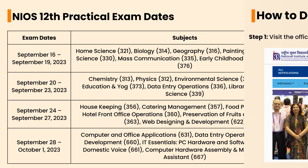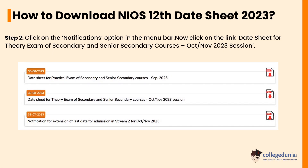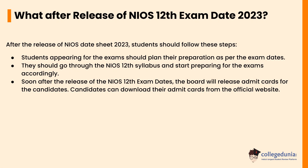Let's check how to download the NIOS Class 12 date sheet 2023. First, visit the official website at sdmis.nios.ac.in. Then click on the notifications option in the menu bar. Now click on the link for the date sheet for theory exams of secondary and senior secondary courses, October or November 2023 session. The NIOS 12 exam date 2023 PDF will open on the screen. Download the PDF and save it for future reference.